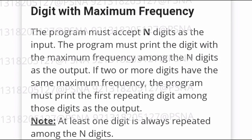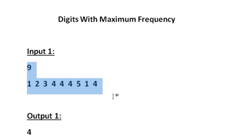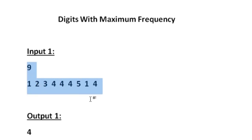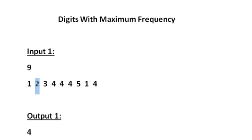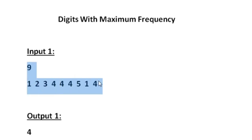This is the question asked in today's SkillRack daily challenge. We are given n integers as input and all the integers will be a digit, so the value of all the integers in the array will be from 0 to 9. This is the given input for sample input 1.